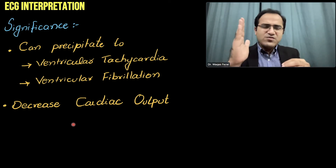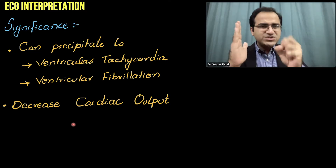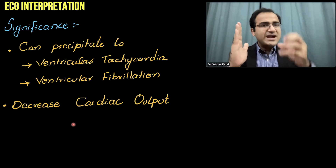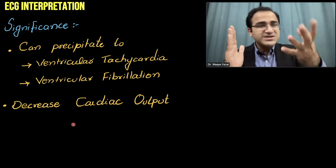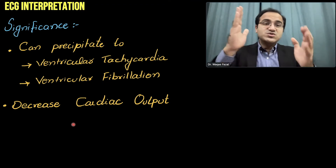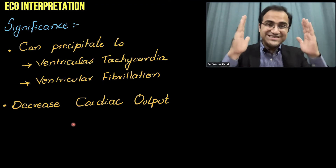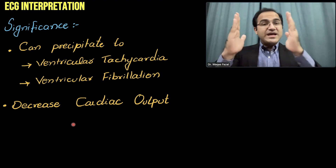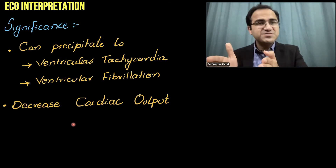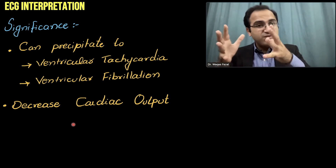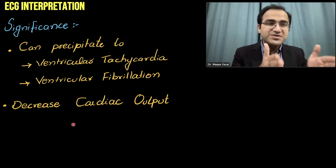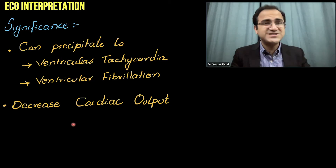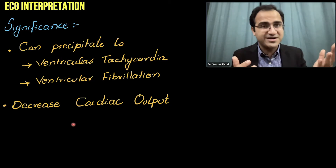If after every normal sinus beat there is a PVC that does not produce proper cardiac contraction, the blood will not be pumped to peripheral tissues. If the rate is 80 beats per minute but 40 of those are PVCs not pushing blood out, the actual effective heart rate is only 40 beats per minute — significantly reducing cardiac output.